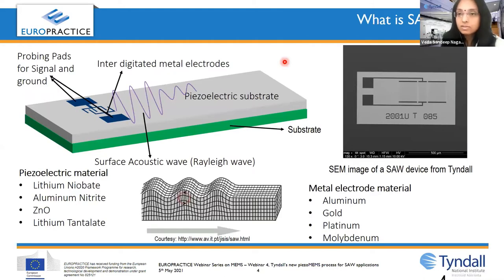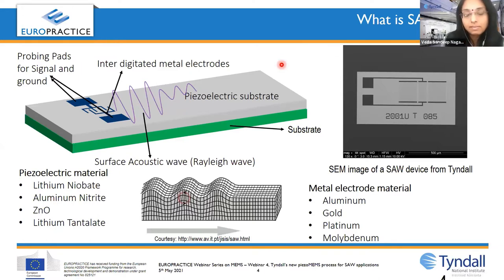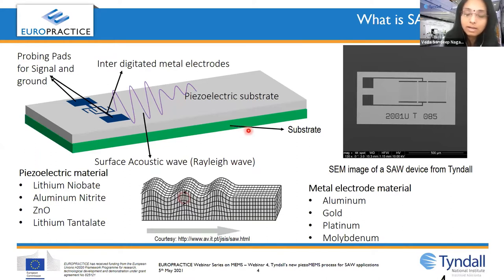So what is a SAW device? SAW stands for surface acoustic wave, and as the name suggests, it's a wave on the surface of a particular substrate — in this case it's the piezoelectric substrate or the piezoelectric film. A SAW device basically will have a substrate. Typically what we see in literature is a silicon substrate, but there are other kinds of substrates as well being used for different kinds of applications. On top of the substrate we have the piezo film, and on top of that a metal layer. The metal layer is patterned to create these interdigitated electrodes.